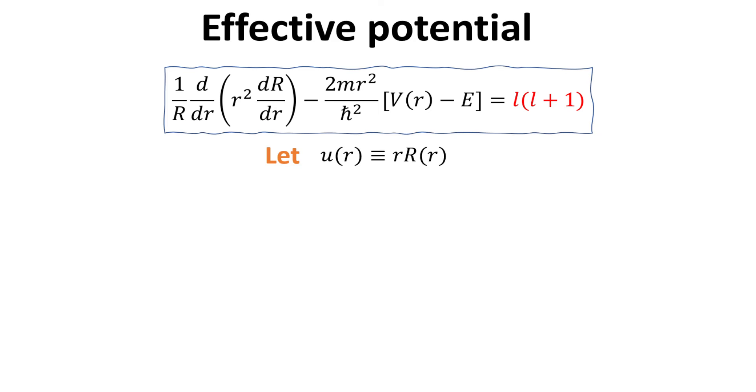Now, back to the radial equation. Our first task is to tidy up this equation. We define a new function U as a product of the radial coordinate r and the function R.